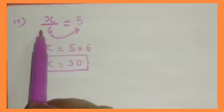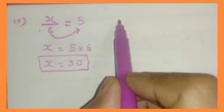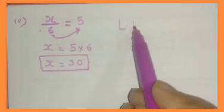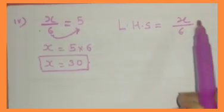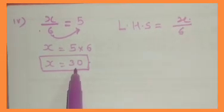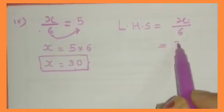Consider the left hand side of the equation. Left hand side of the equation is equal to x by 6. Now in place of x, you have to put x is equal to 30, so 30 by 6.